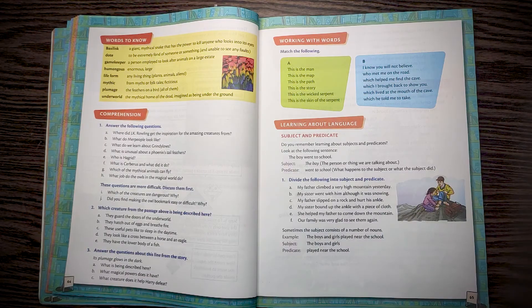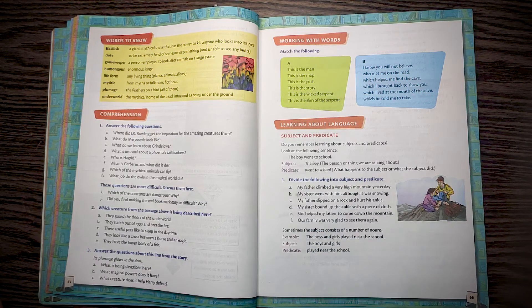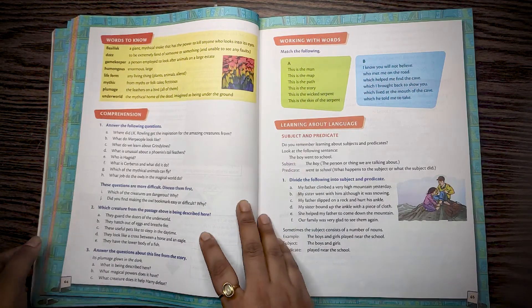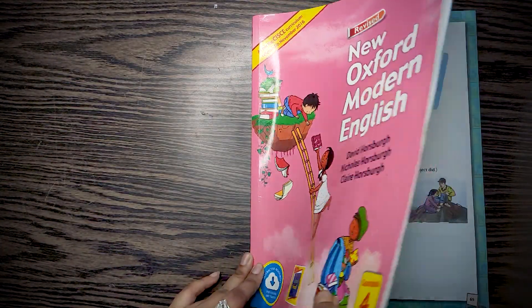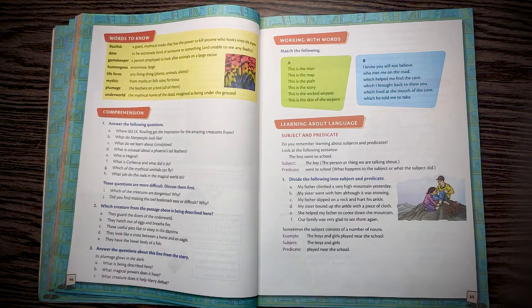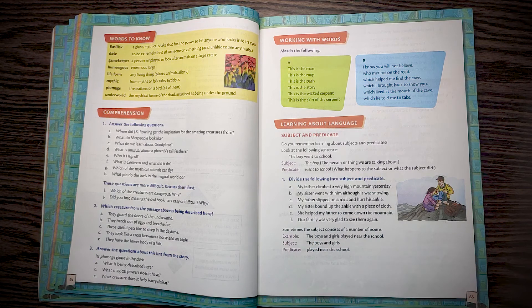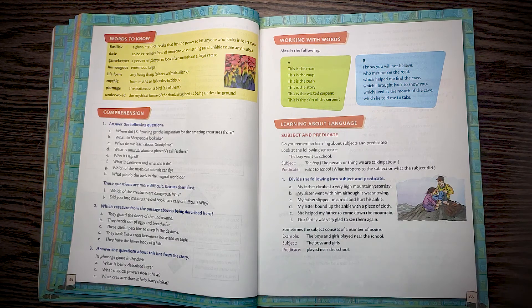Good morning everyone, this is Samasmada and today we are going to do the Comprehension part of chapter number 5, Harry Potter and His Magical Friends from the book New Oxford Modern English Class 4. Before we start the comprehension, if you are not subscribed to my channel, please subscribe and if you like the video, please like it.